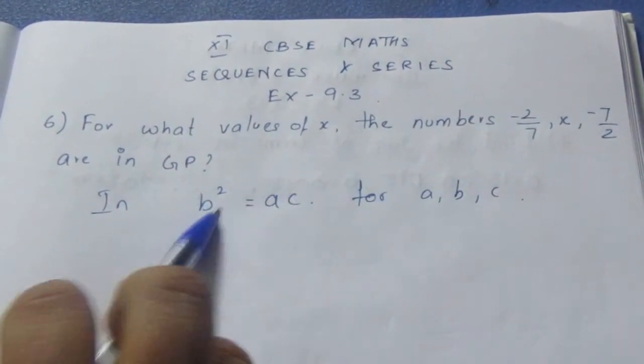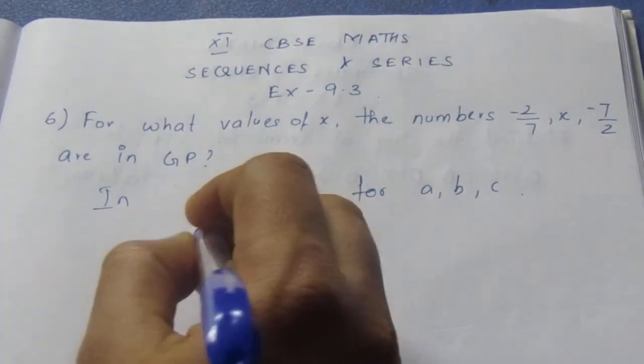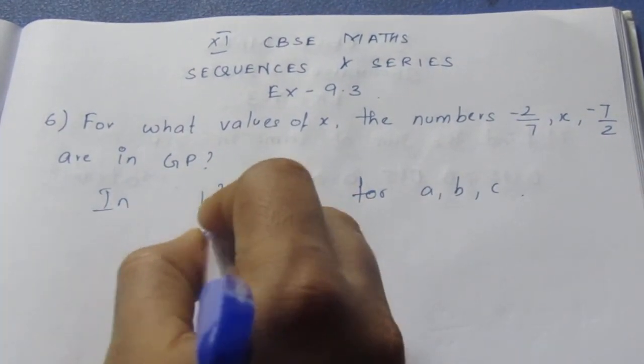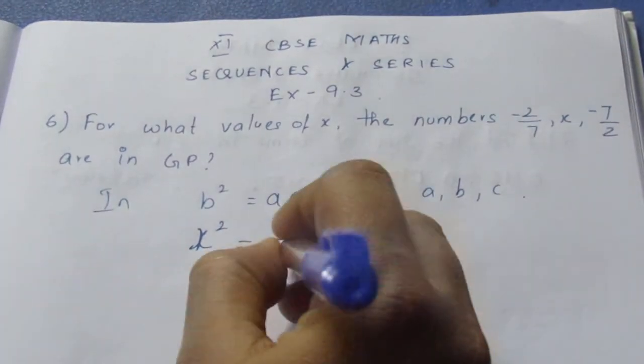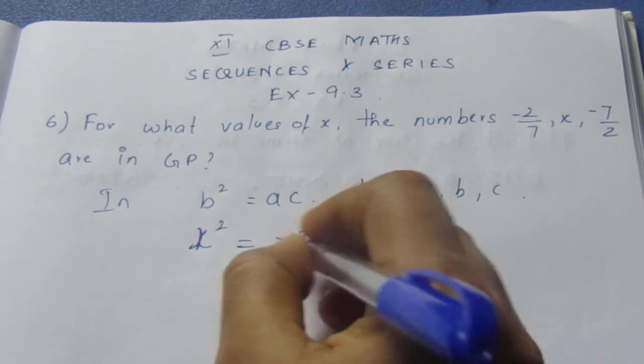So we know that the middle term squared equals the multiplication of the next two numbers. So b², instead of b² we have x here. So x² = (-2/7) × (-7/2). Just cancel this 2.